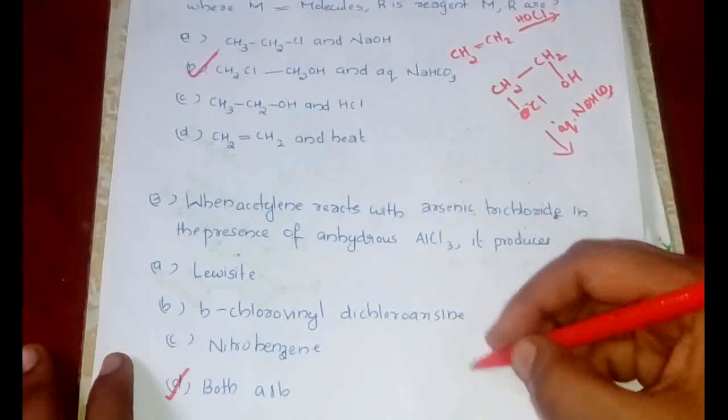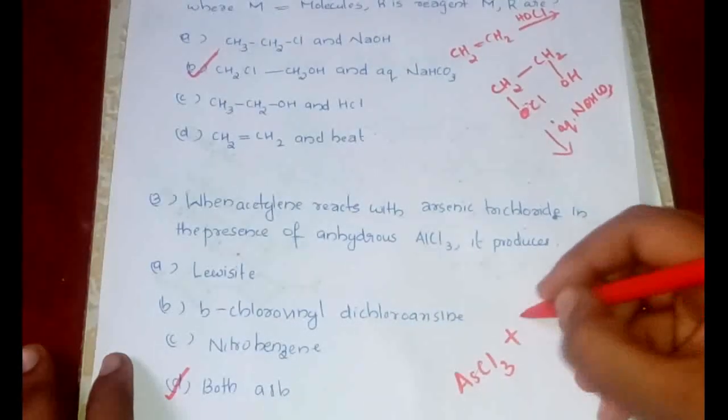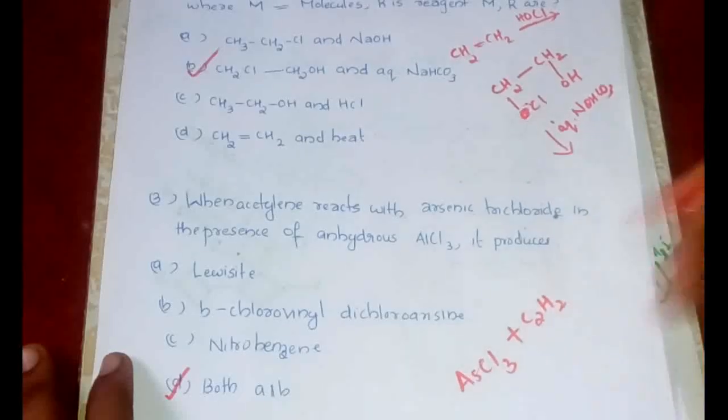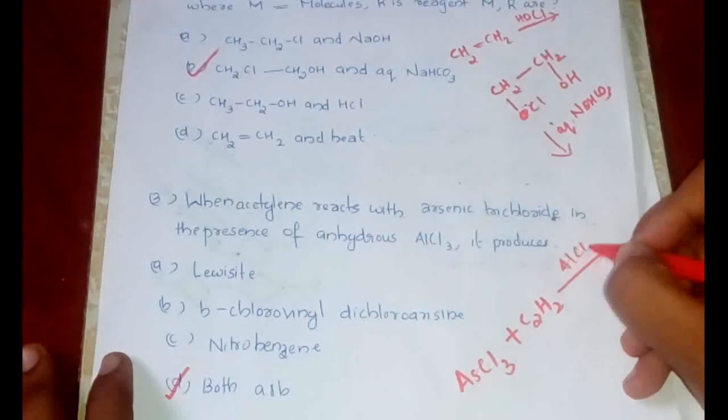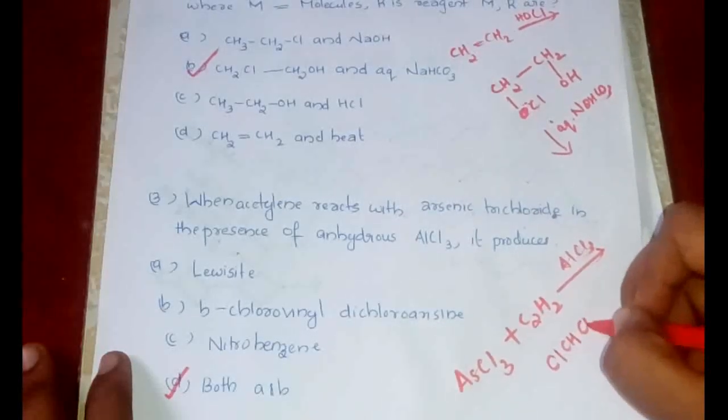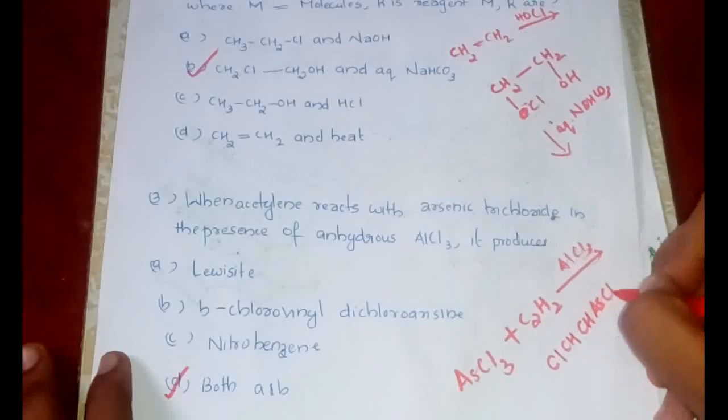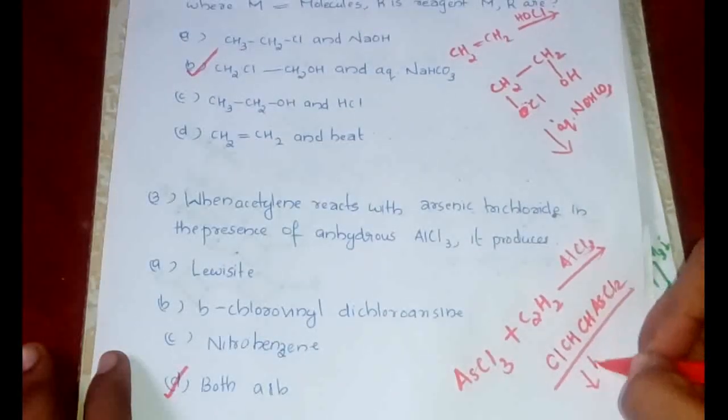Let's take a look at the reaction. Arsenic trichloride, AsCl3, plus C2H2 which is acetylene, then in presence of AlCl3, first it would be forming ClCH=CHAsCl2 which is lewisite, and this on further hydrolysis would be forming chlorovinyl dichloroarsine.